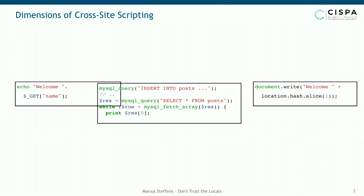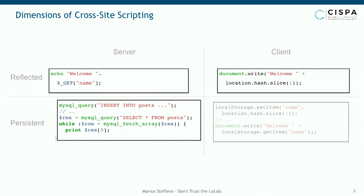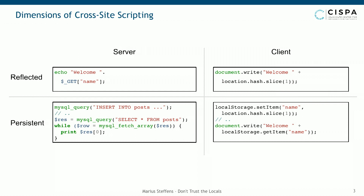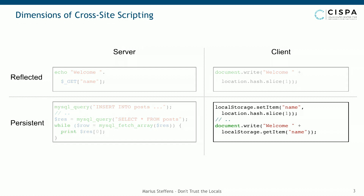We'll argue that it makes sense to distribute the vulnerabilities into two dimensions. We have server and client-side — that is where the vulnerable code portion resides — and that is reflected and persistent as usual. In this talk we'll focus on persistent client-side cross-site scripting, and you can see a code excerpt highlighted on the slide which depicts a sample exploit.